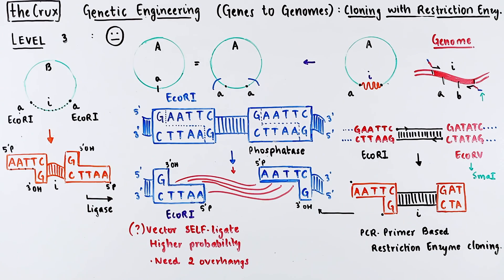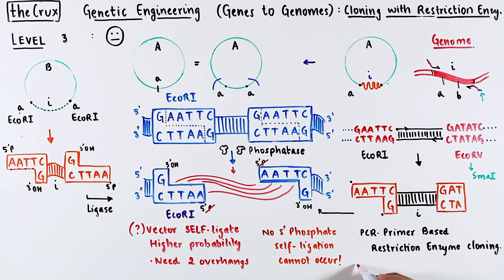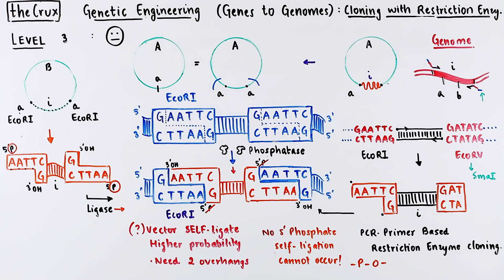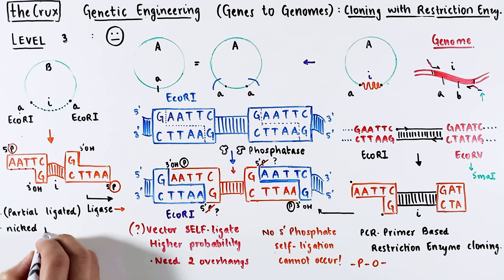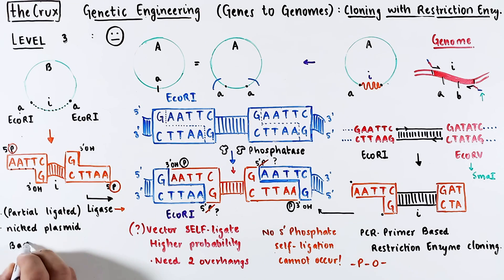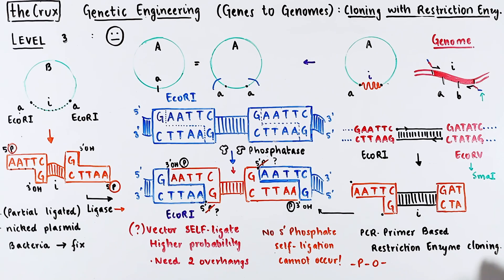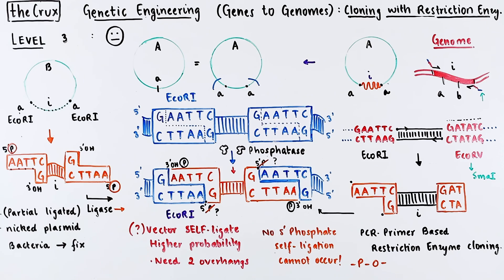To prevent self-ligation, the answer is phosphatase treatment of the vector. Phosphatase enzymes can remove any free 5' phosphates. If you don't have a phosphate, you cannot self-ligate the vector because a phosphodiester bond cannot be formed. The insert has the phosphates, so the vector can only be closed if the insert is in the middle. This type of ligation is a partial ligation — it creates a nicked plasmid, which is a normal occurrence. Once inside the bacteria, the plasmid can be fully closed by the bacterial DNA repair enzymes. Like subcloning, you can do the same with PCR using identical overhangs on both forward and reverse primers.